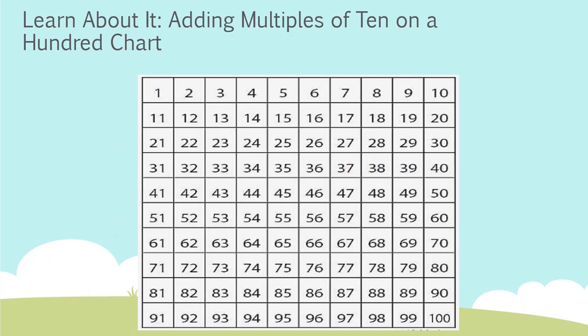What does this look like when we use subtraction? Let's try with 27 minus 10. Let's find the number 27. We want to subtract 10. We could count back by ones like this. 1, 2, 3, 4, 5, 6, 7, 8, 9, 10.